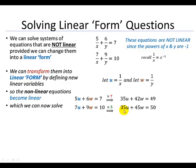And then since the coefficients here are both 35, so positive 35u and positive 35u, we can subtract our equations. So 35u minus 35u will be 0u. 42w minus 45w will be negative 3w. And then 49 minus 50 is minus 1.